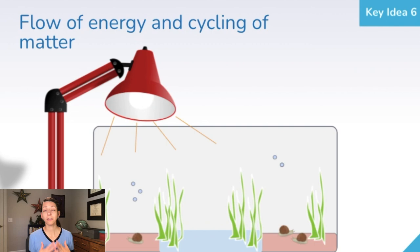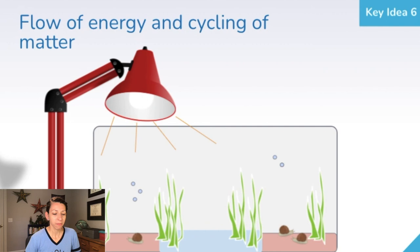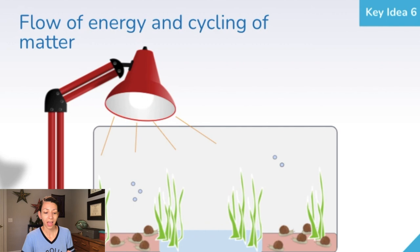Analyzing the flow of energy and the cycling of matter within an ecosystem is an important part of biology. Plants use carbon from the atmosphere to undergo photosynthesis and create glucose and oxygen — the ingredients for respiration. If more snails are added to a container, we would see more carbon dioxide, and more carbon dioxide would lead to more plant growth because the plants could take in more carbon dioxide to perform more photosynthesis.